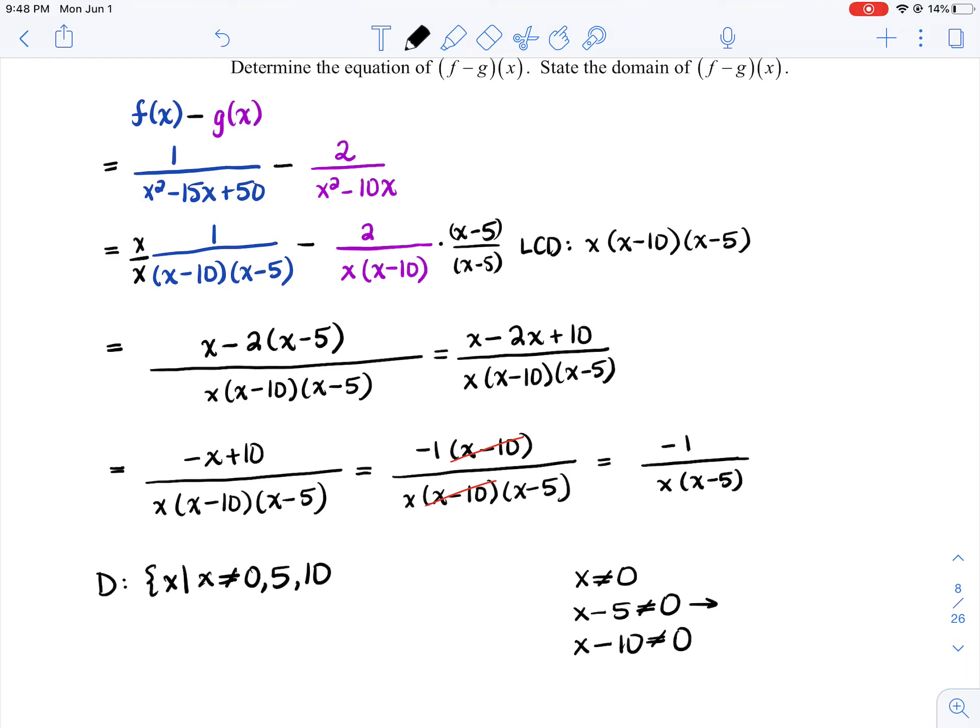Okay, why 5 and 10? Because if x minus 5 can't equal 0, x can't equal 5. If x minus 10 can't equal 0, then x can't equal 10. So your domain's just going to be x can't equal 0, 5, and 10, but it could be all the other real numbers.